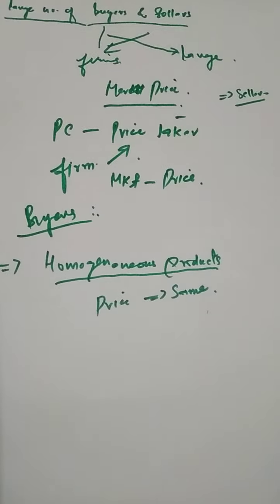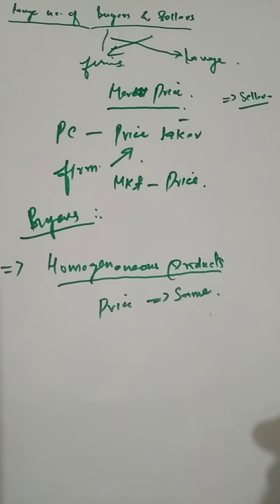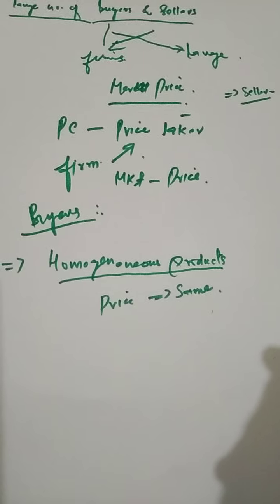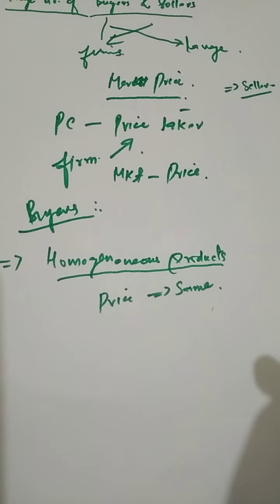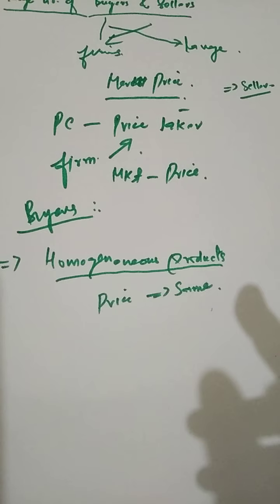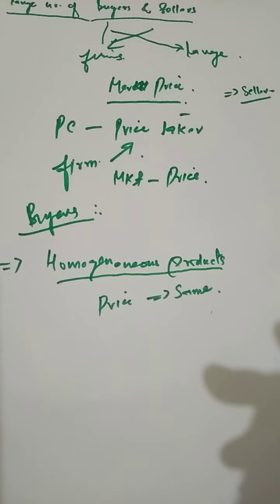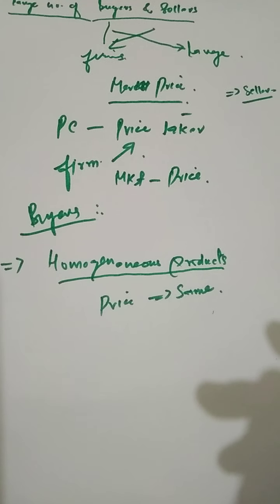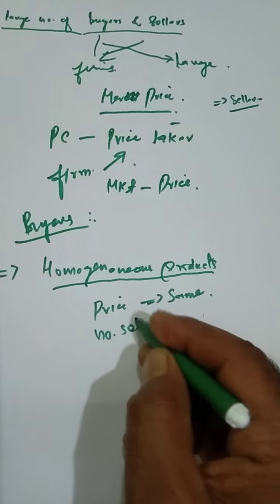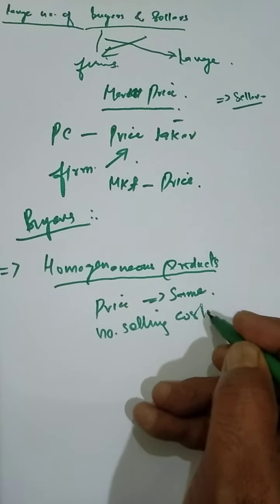Selling a homogeneous product at the given price rules out the possibility of any advertisement or other sales promotion expenses. In perfect competition, advertising is not needed. There are no selling costs under perfect competition.